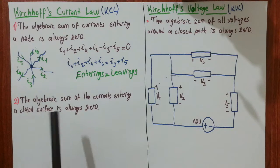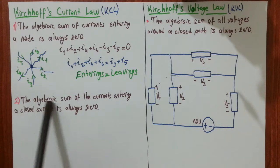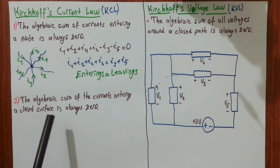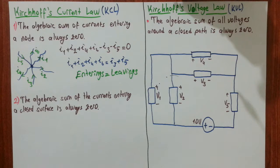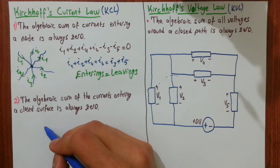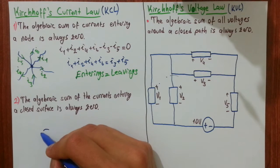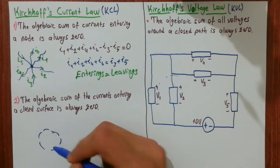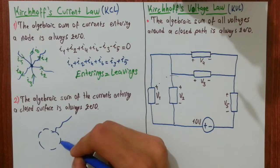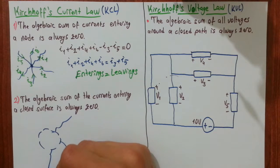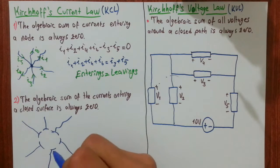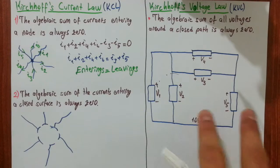The second statement of KCL is: the algebraic sum of the currents entering a closed surface is always zero. Imagine this is your closed surface, and there are several branches connected to it, with currents flowing through those branches.